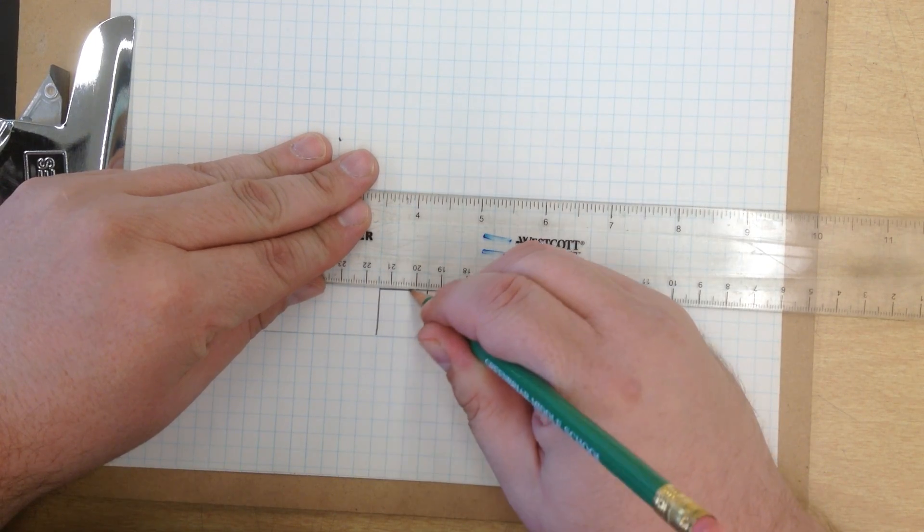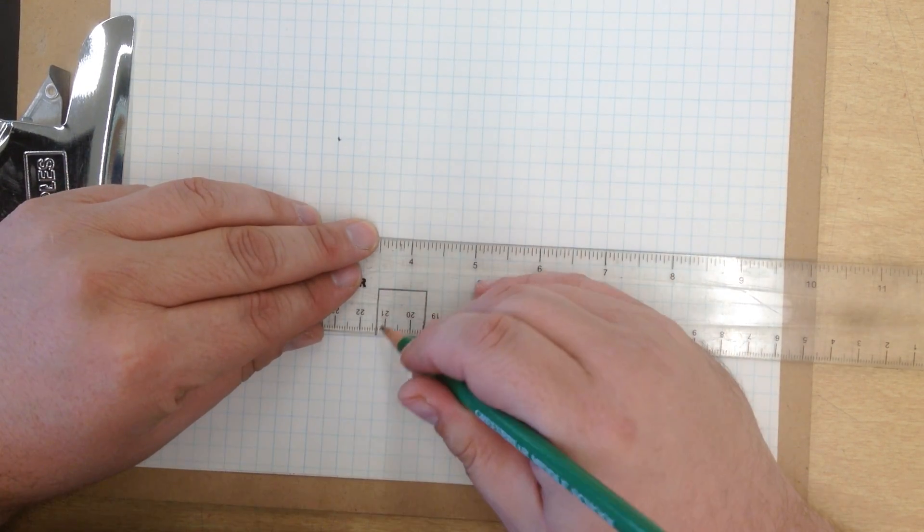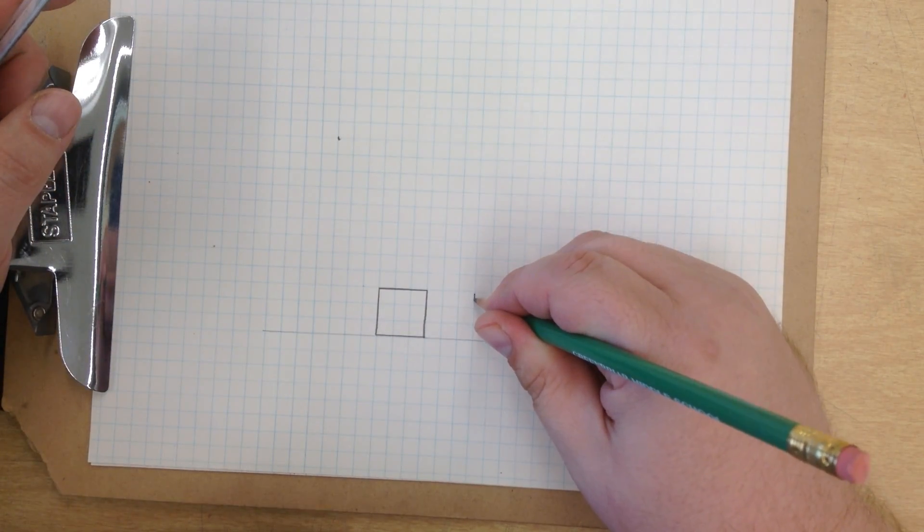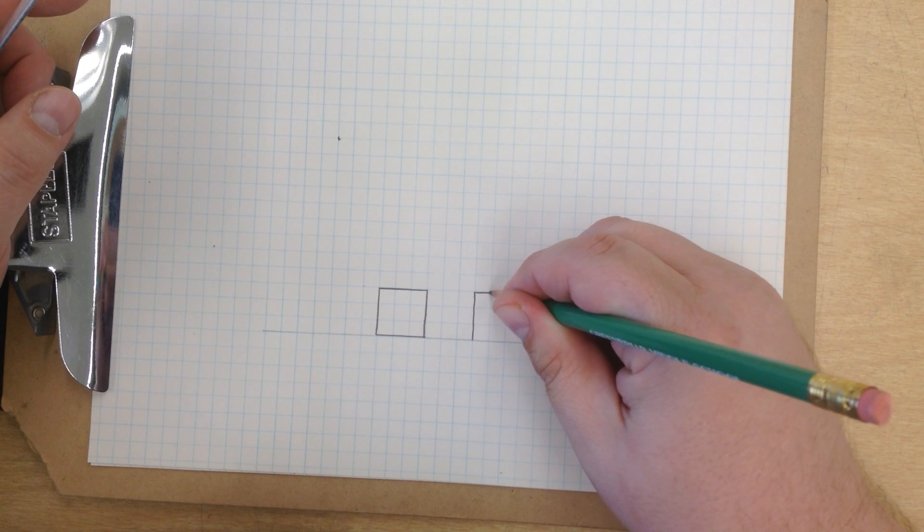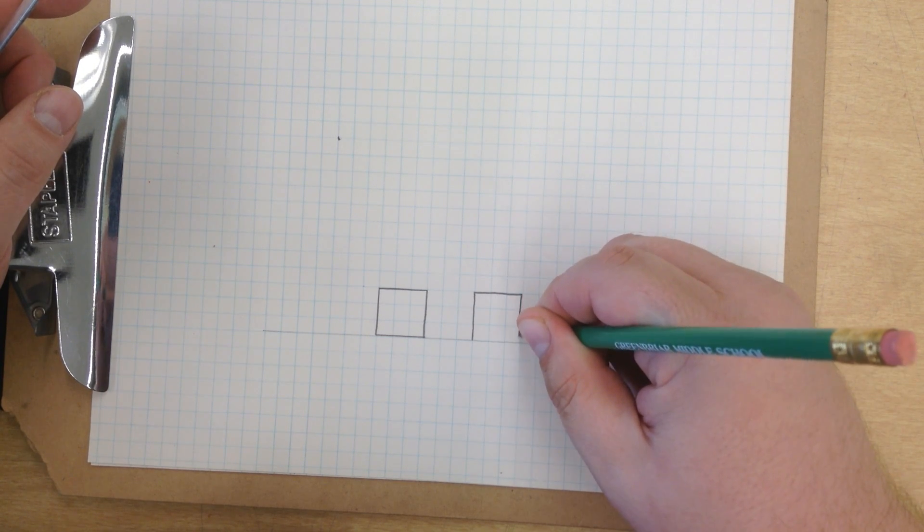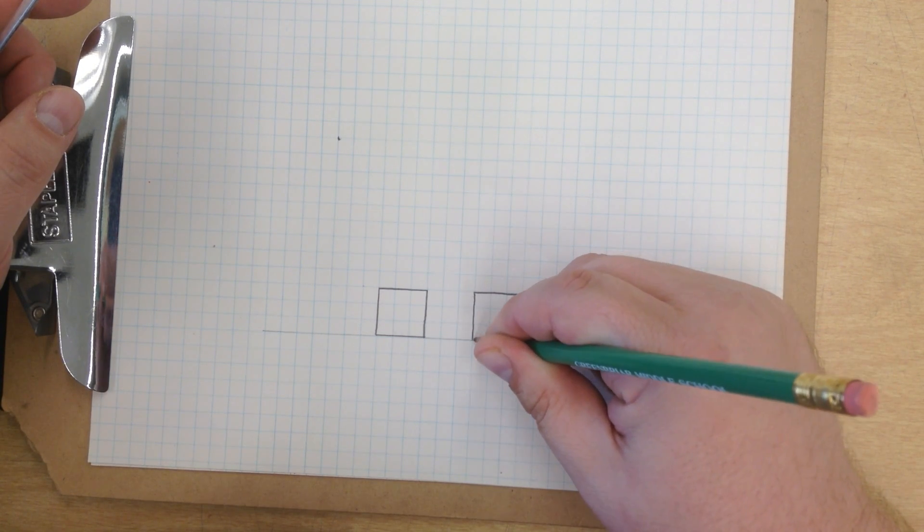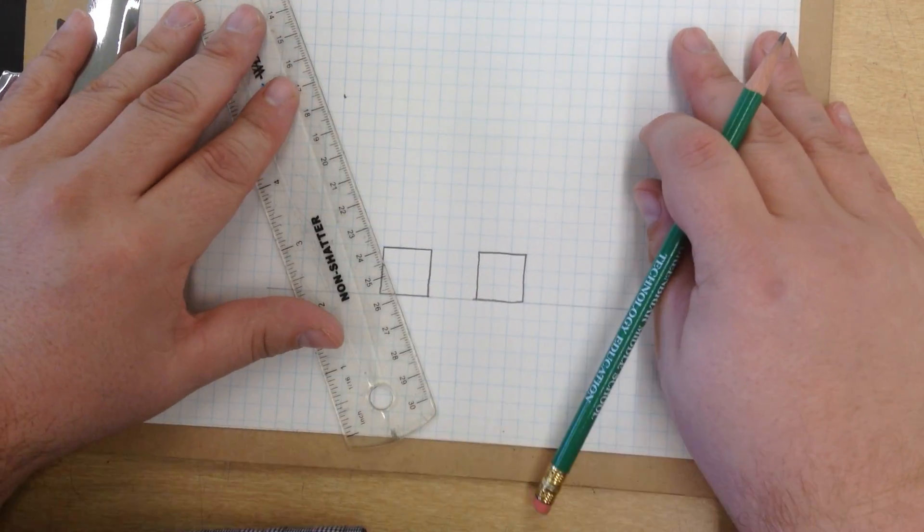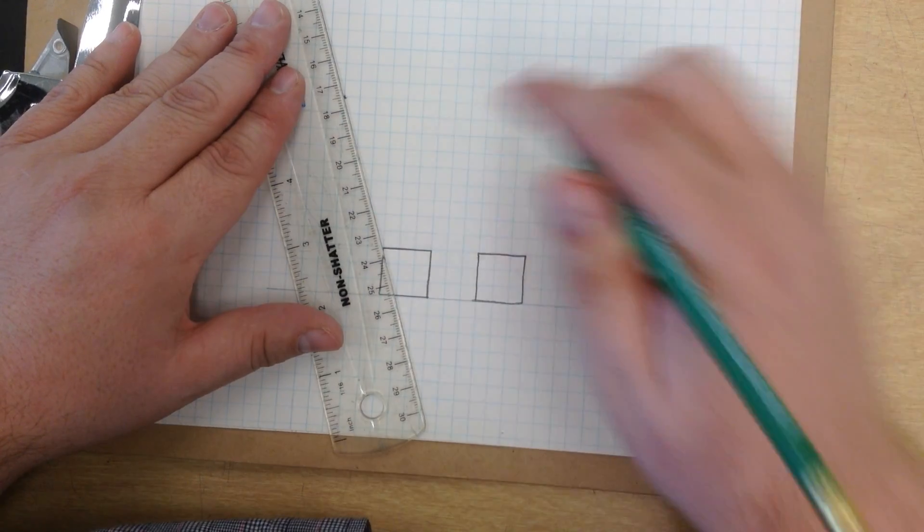And you can do this with a straight edge if you'd like, or if you want to make it a little bit quicker you can just do it by hand. Now that I have those cubes drawn out, I'm going to connect all their points with my vanishing point.